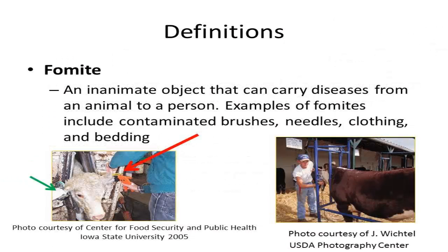A fomite is an inanimate object that can carry pathogenic agents from an animal to a person. Examples of fomites include contaminated brushes, clippers, needles, clothing, and bedding like straw or shavings. Fomites contaminated with a disease agent can transmit disease through direct contact with a person.